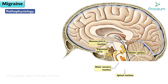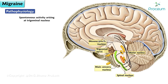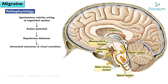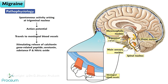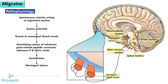Migraine is caused by spontaneous activity arising at the trigeminal nucleus, generating an action potential which depolarizes the thalamus, producing unwanted cutaneous and visual sensations — creeping sensation and flashes of light (aura) respectively. This action potential travels to the meningeal blood vessels, stimulating the release of calcitonin gene-related peptide, serotonin, substance P, and nitric oxide, causing vasodilation.